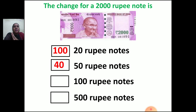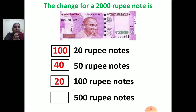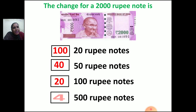If you have 100 rupee notes: in 1000 you get 10, so in 2000 you get 20 — use 20 one-hundred-rupee notes to make 2000 rupees. And if you have 500 rupee notes, you need only 4: 500 plus 500 plus 500 plus 500 is 2000 rupees. This is the way to show the change.